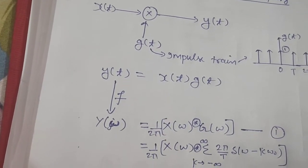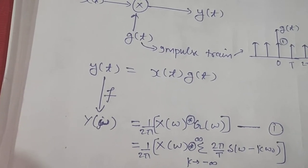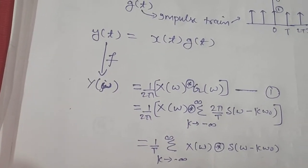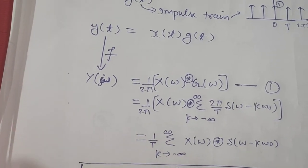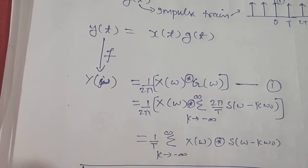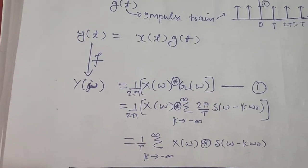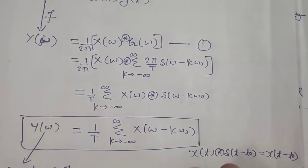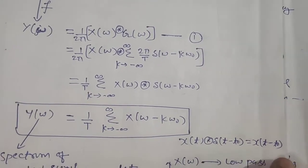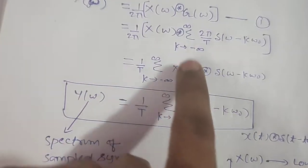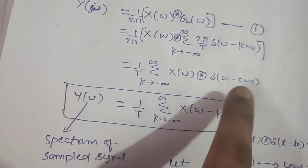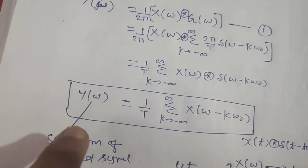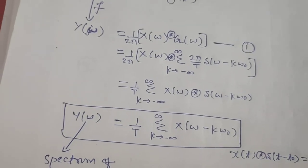We have just seen that G(ω) equals summation from k equals minus infinity to infinity of (2π/T)·δ(ω minus k·ω₀). The 2π terms cancel, giving 1 over T outside the summation times the sum of X(ω) convolved with δ(ω minus k·ω₀). Using the convolution property — that convolving a signal with a shifted impulse δ(ω minus k·ω₀) shifts the signal — we get Y(ω) equals (1/T) summation of X(ω minus k·ω₀). This is the spectrum of the sampled signal.